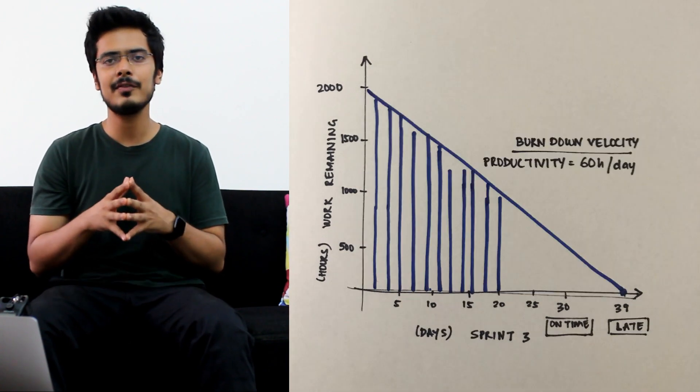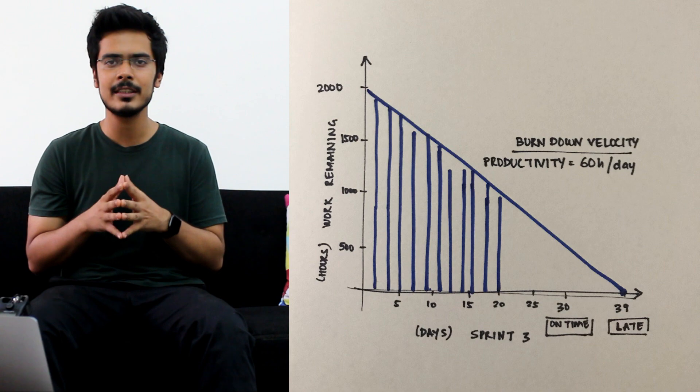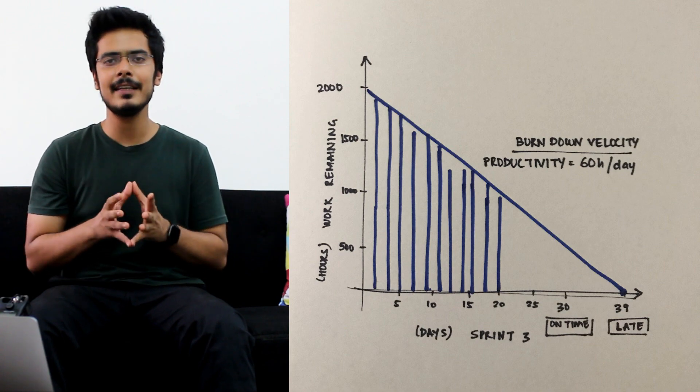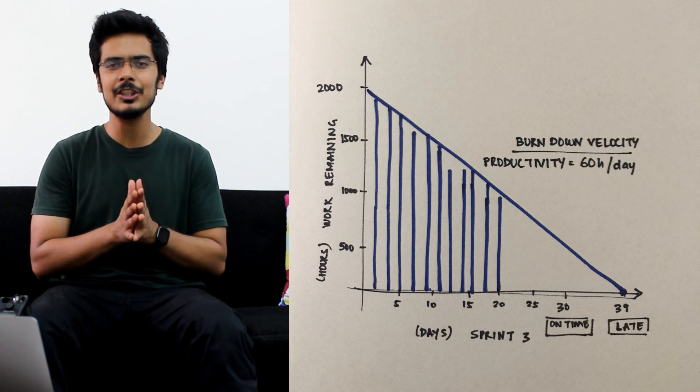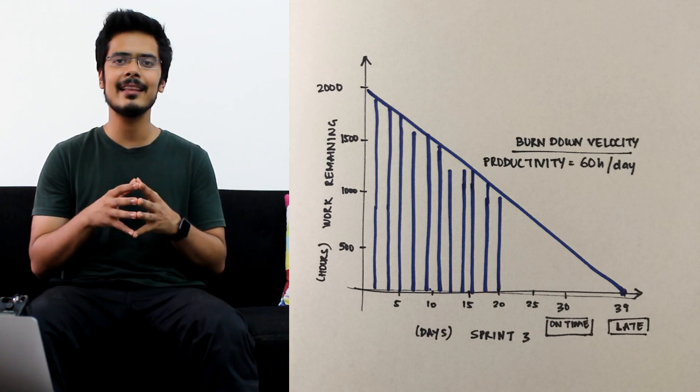The slope of this graph, typically known as the burndown velocity, will tell you the average productivity of your team in a given day, which can be used to estimate the completion date of all the user stories in the sprint.